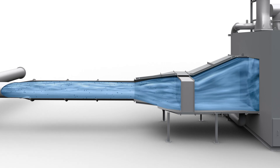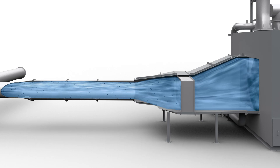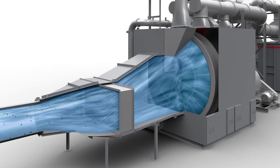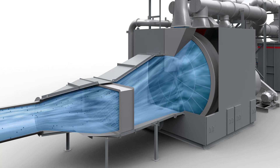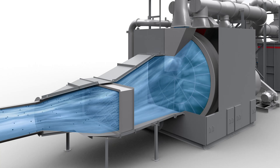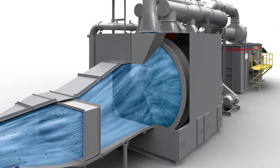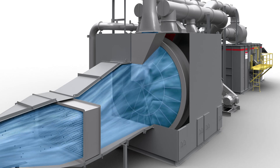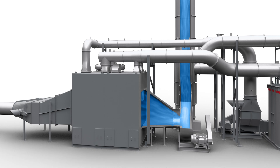The polluted airstream first passes through a filter box to protect the concentrator from any particulate that may come from the process. It then passes through a rotor concentrator wheel where volatile organic compounds are separated from the air through adsorption onto the media.